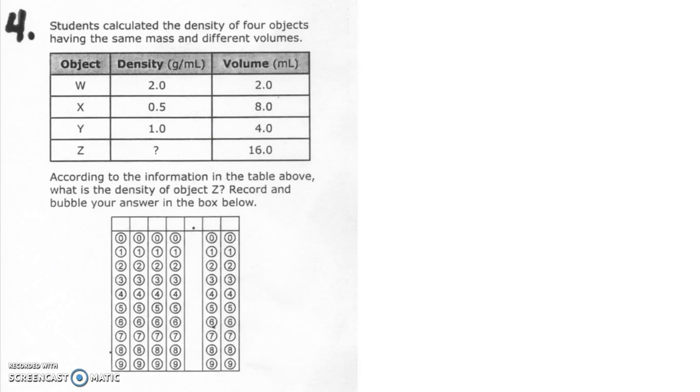All right, number four. Students calculated the density of four objects having the same mass and different volumes. According to the information in the table above, what's the density of object Z? And then once you find it, you have to bubble it in.